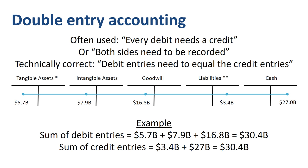The sum of the amounts in the credit entries is $3.4 billion credit plus $27 billion credit, which equals $30.4 billion credit. The sum of the debit entries equals the sum of the credit entries.